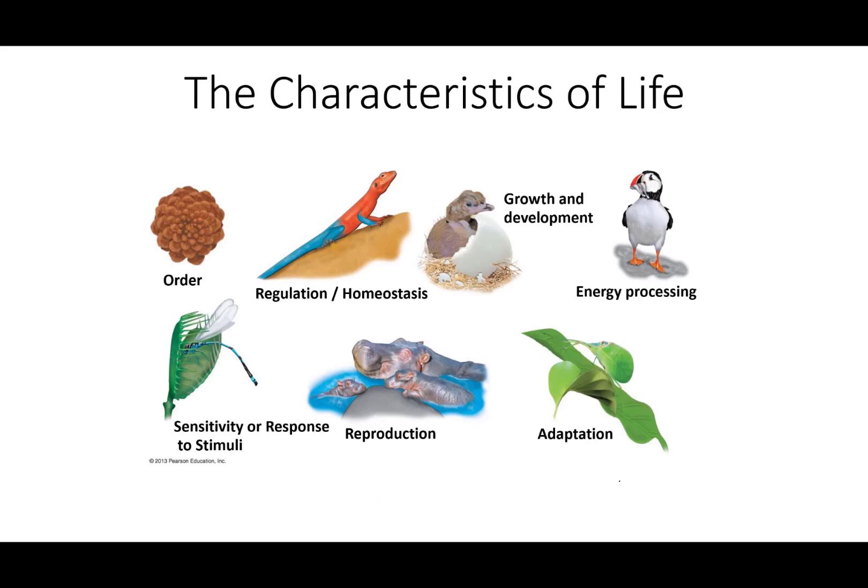Those seven characteristics are: order or organization, regulation and homeostasis, growth and development, energy processing, sensitivity or response to stimuli, reproduction, and adaptation. Those last two — reproduction and adaptation — don't need to be true for the individual, but they do need to be true for the population.